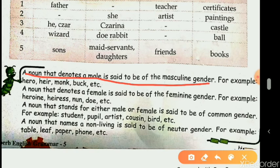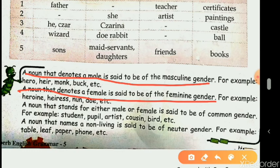Feminine gender: a noun that denotes a female is said to be of feminine gender, referring to all women, girls and female animals. Examples: mother, sister, grandmother, heroine, nun, doe, priestess and many more.